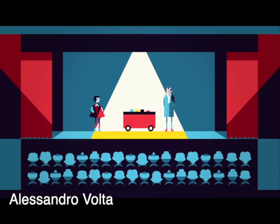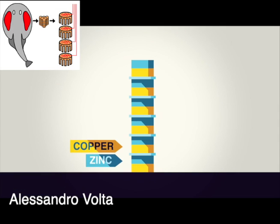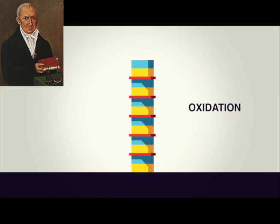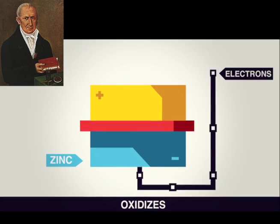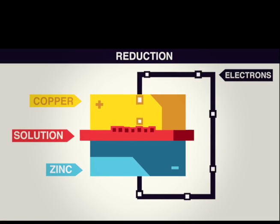Volta sees a torpedo fish with different cells. He makes a stack of different metals with acid in between. He makes the first battery.